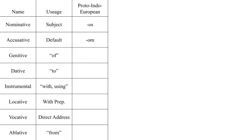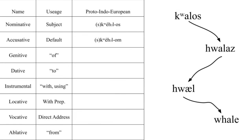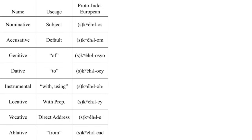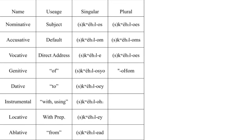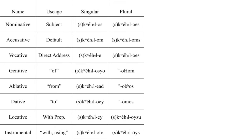We should probably start with something relatively simple: the aforementioned 'os' ending. A fine example word is 'quelos,' which produces 'whale' in English. Inflected singular forms would be: os, om, e, osio, ead, oe, e, and oa. But we also need plurals. These are: oes, oms, oes, oom, opos, omos, oisu, and ois.